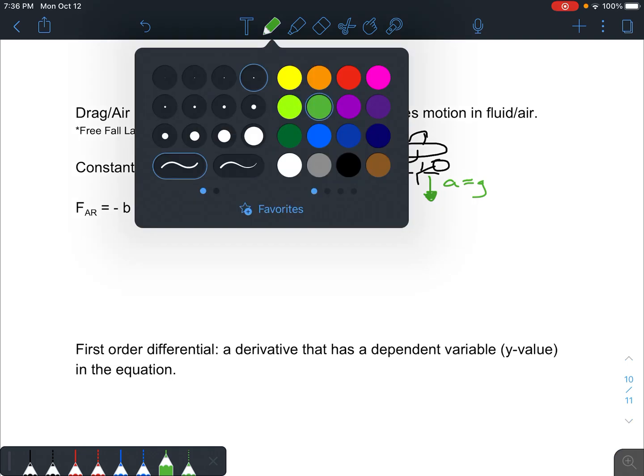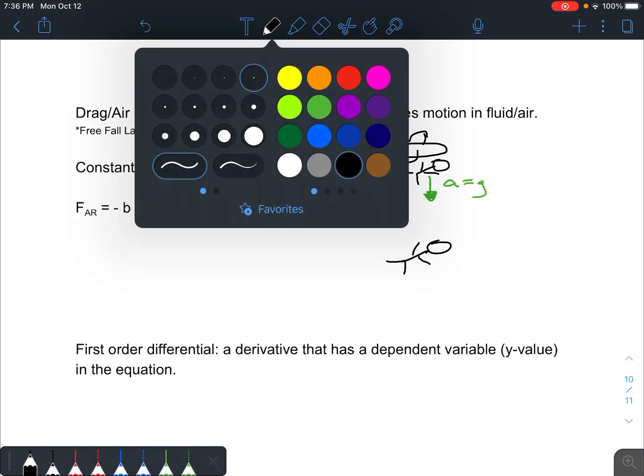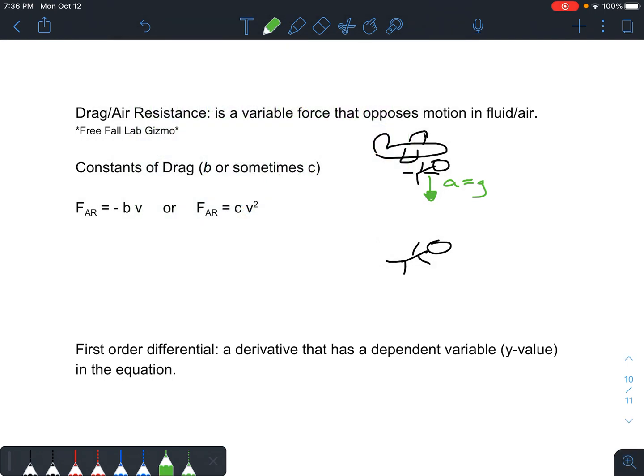But after a good bit of time, you then start to pick up some speed, because the acceleration acts on you for some period of time. And then your acceleration begins to slow down. It becomes less than g, until finally, you reach a point called terminal velocity. And terminal velocity is when you reach a constant speed.